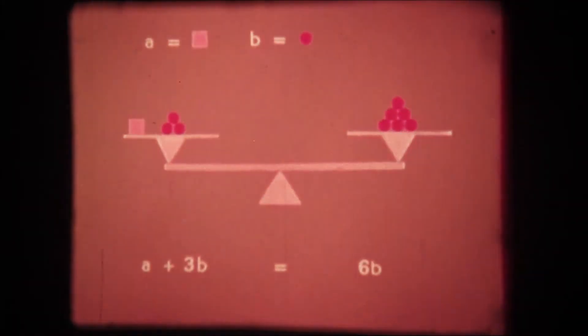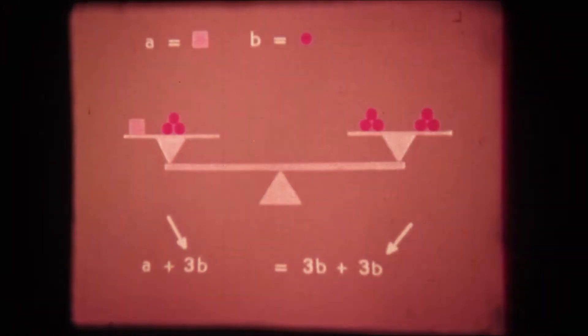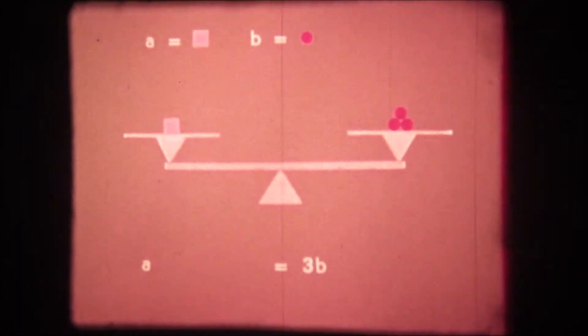Now the next step is easy. We can break down 6B into 3B and 3B without unbalancing our equation. Now we have a quantity 3B on each side which can be subtracted. Now the equation has been simplified until it shows a very clear relationship between A and B.